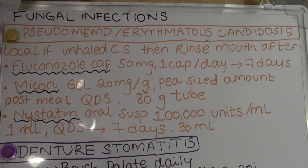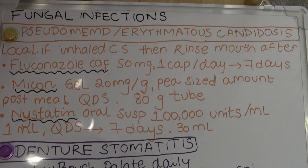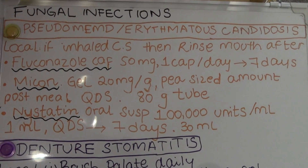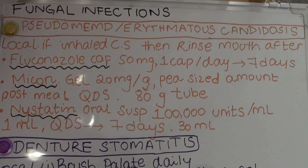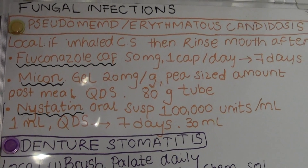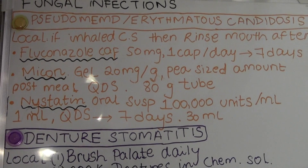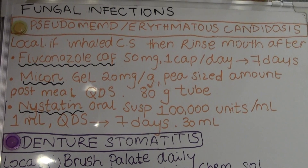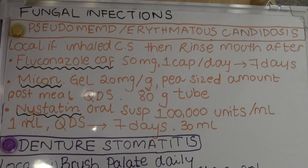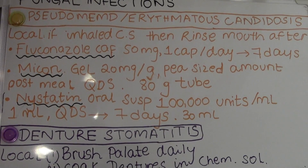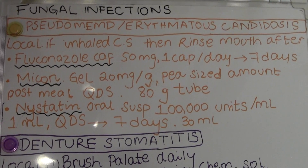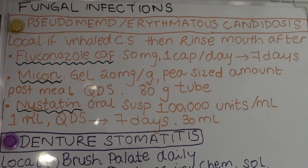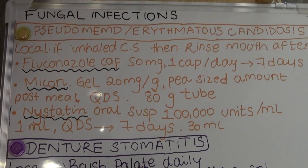Coming to fungal infections, the fungal infections we deal with are pseudomembranous candidosis, erythematous candidosis, denture stomatitis, angular cheilitis, and so on. The kinds of patients at risk of developing fungal infections would be people who use inhaled corticosteroids, cytotoxic medications, broad spectrum antibiotics, diabetics, HIV patients — any patients who have their immune system compromised could be at risk of developing oral fungal infections.